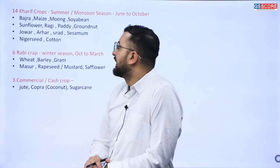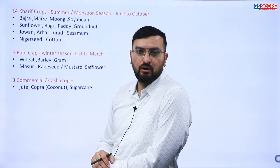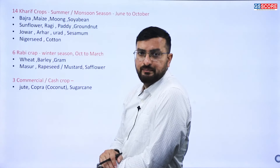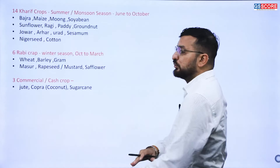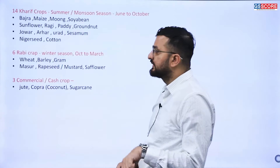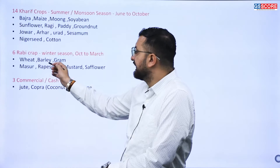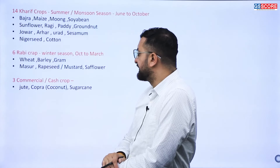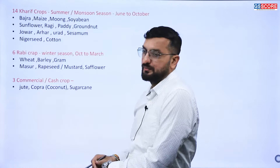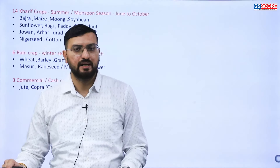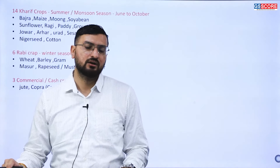The 23 MSP crops include seven cereals such as paddy, wheat, maize, sorghum, pearl millet, barley and ragi; five pulses including gram, tur, moong, urad and lentil; seven oilseeds such as groundnut, rapeseed-mustard, soybean, sesame, safflower; and four commercial crops including copra, sugarcane, cotton and raw jute. There are 14 Kharif crops (June to October) and 6 Rabi crops (October to March). For sugarcane, a Fair and Remunerative Price (FRP) is given by mill owners, not directly by the government.